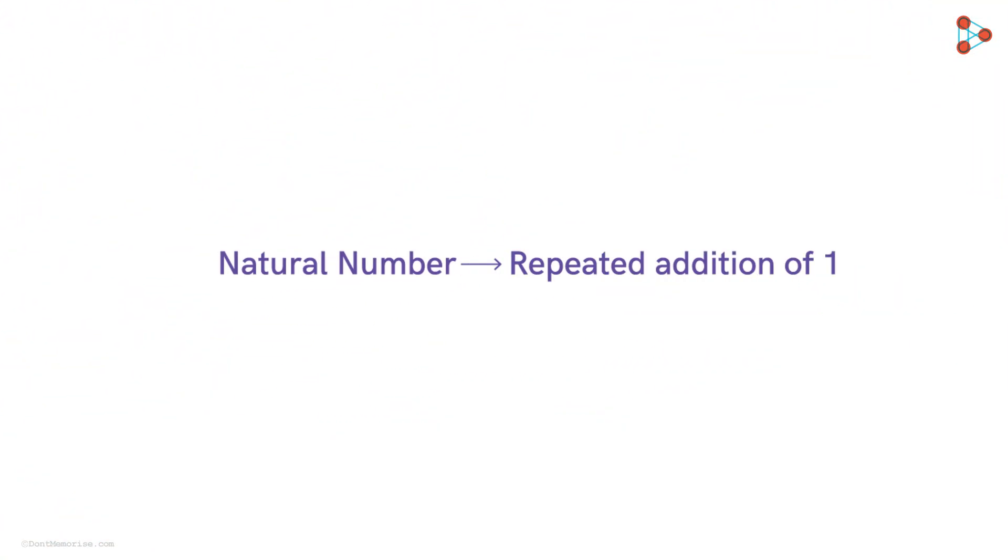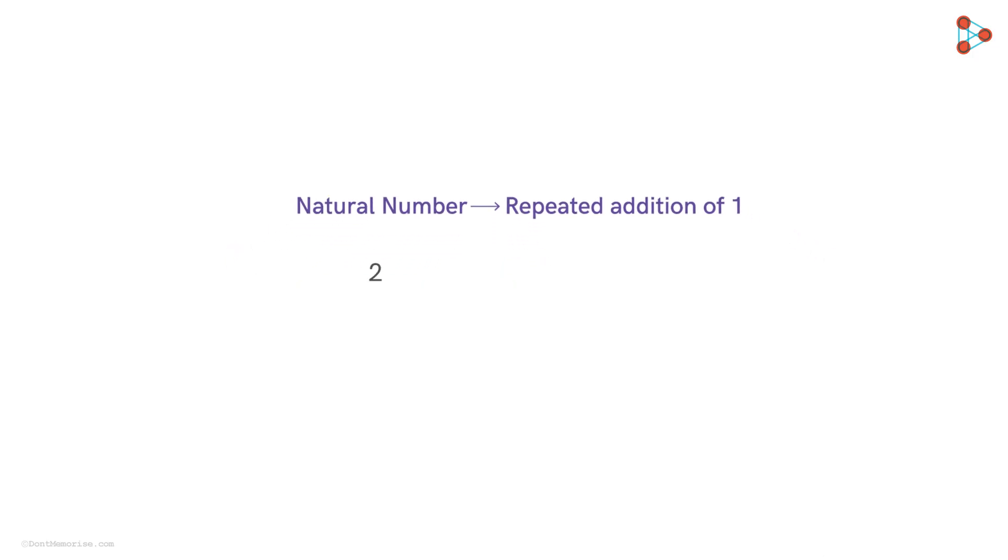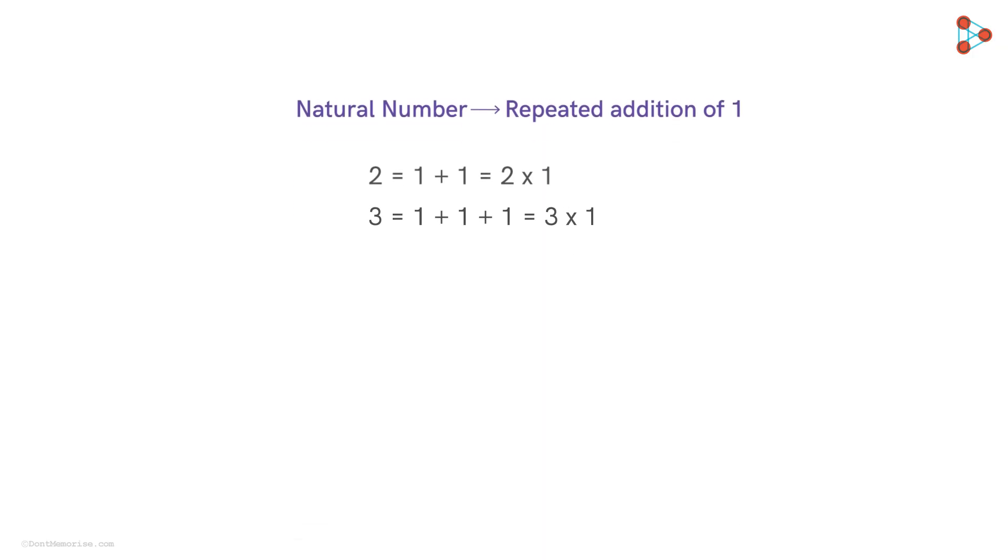We know that any natural number can be written as a repeated addition of the number 1. 2 can be written as 1 plus 1, which is 2 times 1. 3, 1 plus 1 plus 1, that is 3 times 1, and so on. So any natural number is just the number 1 added to itself a few times.